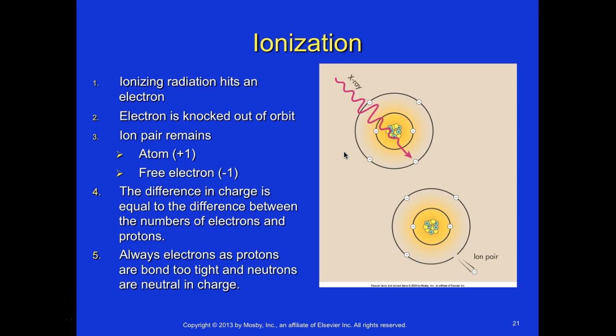With ionization: radiation hits an electron and knocks it out of its orbit. The ion pair remains — an atom with a charge of +1 and a free electron at −1. The difference in charge equals the difference between the numbers of electrons and protons. It is always the electron that gets hit and knocked out, since protons are bound too tightly and neutrons are neutral.